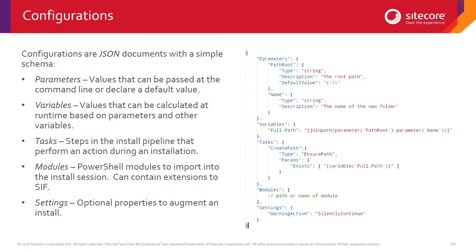Tasks are steps in the pipeline — we can add multiple tasks in, and they will run in the order that they're declared. Modules, as I mentioned, is where we get to do extensions, and I'll talk about that later on.